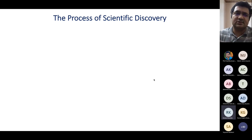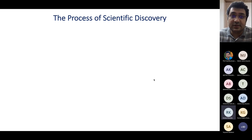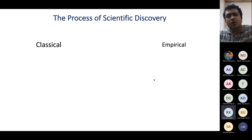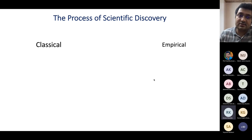You've been hearing about computational data sciences, big compute, big data — you might be wondering where this comes into the picture. How is the process of scientific discovery done in these different domains? Basically there are two ways scientific discovery is done: one is called the classical approach and the other is called the empirical approach.